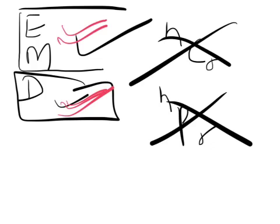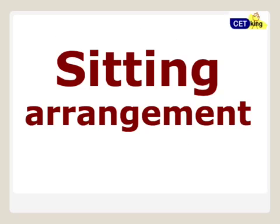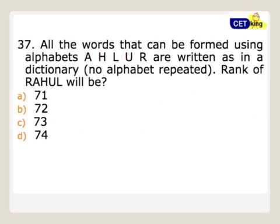Next is a question based on the sitting arrangement. For example, this is a typical question: what is the rank of Rahul if all the alphabets of the word R-A-H-U-L are arranged in dictionary order - what is going to be the rank of Rahul? This is a typical question. If you have not seen this question earlier it's impossible to solve. Now I want you to, after this video, find out all these kinds of questions from various books and solve them.